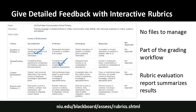Blackboard totals the grade based on how you've built the rubric and lets you give detailed feedback for each row. After grading, you can run the rubric evaluation report from the Grade Center column header for any assignment that used a rubric. This report summarizes what percentage of students met each level, and gives averages, standard deviations, mean, median, and mode for each criterion.